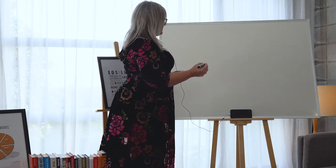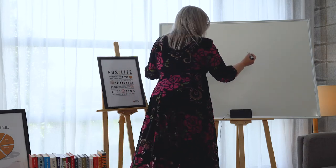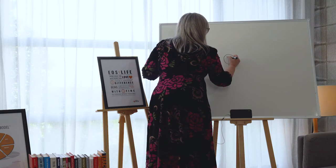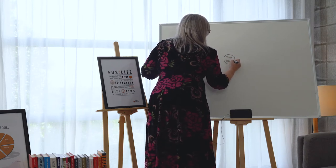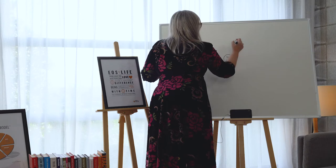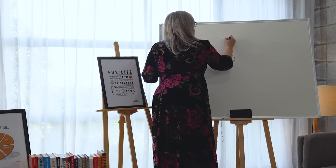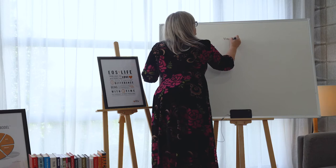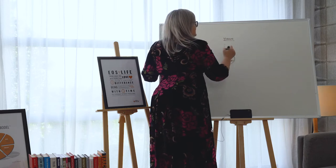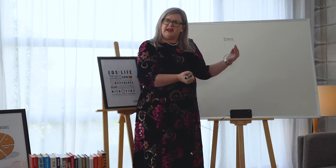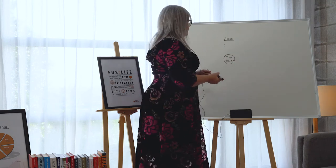So let me show you very quickly the six key areas. The EOS model is really simple and it always starts with your business at the centre. The first component is vision — getting all of your people 100% on the same page, knowing where they're going. In later videos I'll talk more about what that actually means.